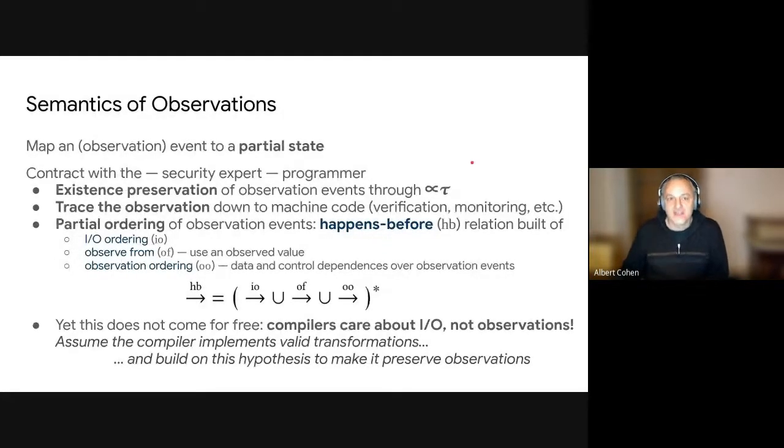So let's talk about observations. In brief, an observation is defined only as a partial state, so think of a snapshot of the state of the semantics, by focusing on some specific values or references or memory we care about. And in addition to this snapshot, we established a contract between the security experts, the programmer and the compiler, which is that we want the compiler to preserve three things on the observations. We want to make sure that whenever an observation is made before transformation, it's still happening after transformation, except the code dies, for example, because it's not useful downstream.